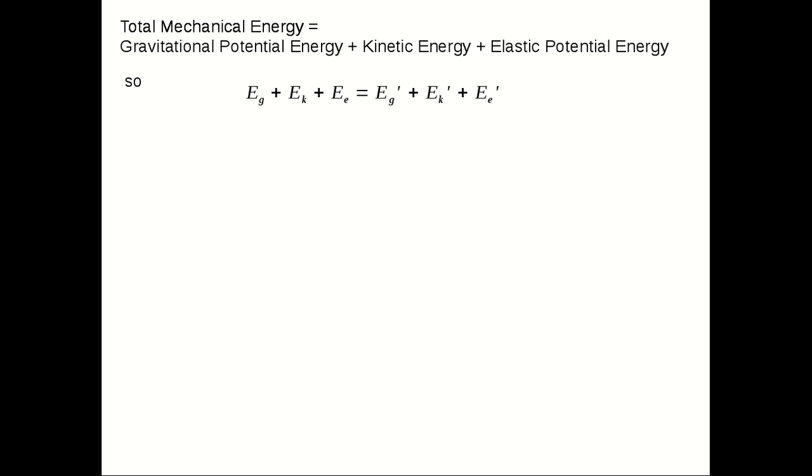We can write that this way, which is shorter, a formula that shows us the total of all the mechanical energy before the transformation and the total after. So here we see the total before, here we see the total after. You'll see we have gravitational potential energy, kinetic and elastic potential energy.